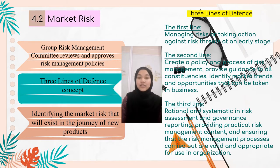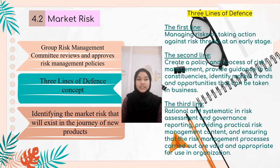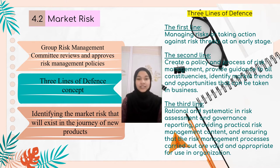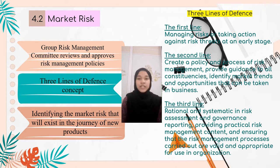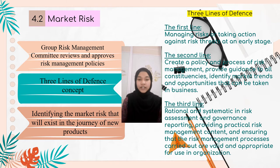Next, 4.2 is market risk. There are three ways used by Alliance Islamic Bank Berhad in managing market risk. First, the Group Risk Management Committee reviews and approves all risk management policies, which are recommended and designed by the Group Assets and Liabilities Management Committee to ensure that market risk achieves appropriate levels and parameters applicable to their business strategy and planning. Second, they use the three lines of defense concept, which requires the involvement of three different parties to launch market risk management. The first line is represented by the Group Financial Market, which manages risk and takes action against threats at an early stage to avoid risk from the start of business activity.